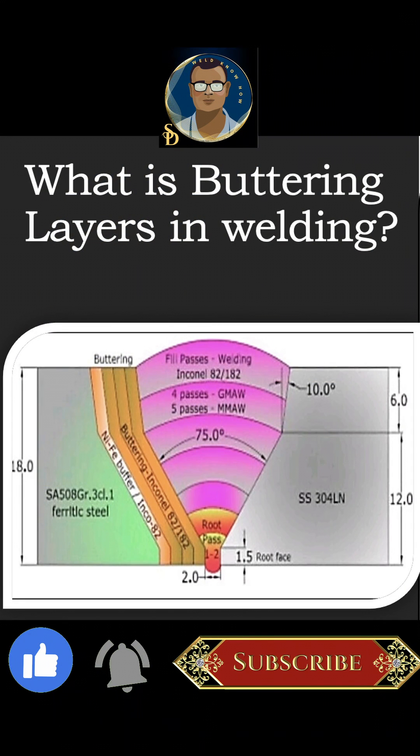In some dissimilar alloy joints, a compatible filler alloy electrode is available to weld the two alloys.